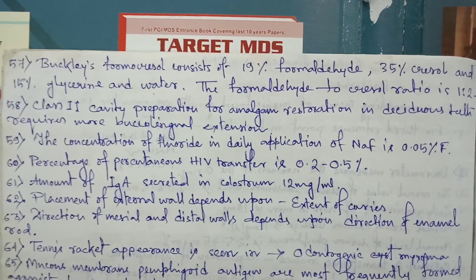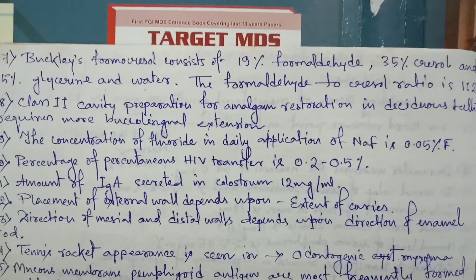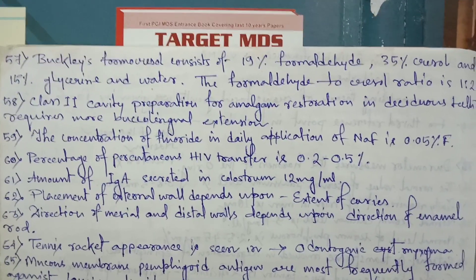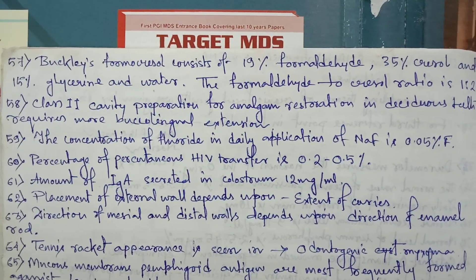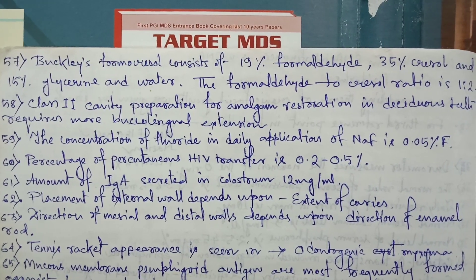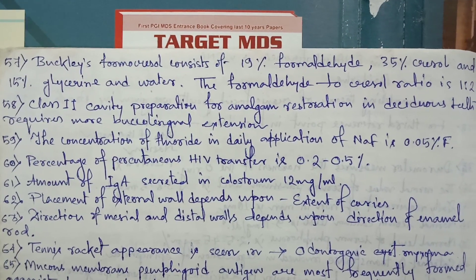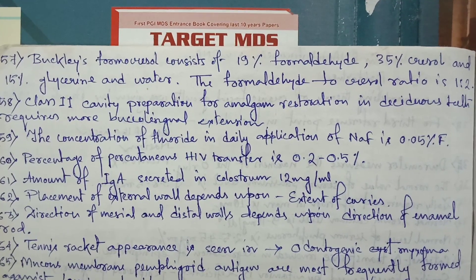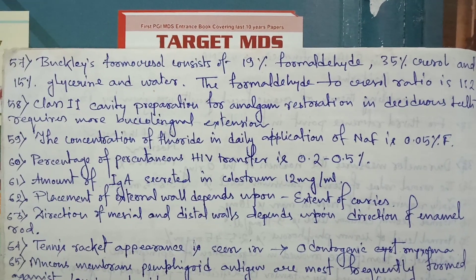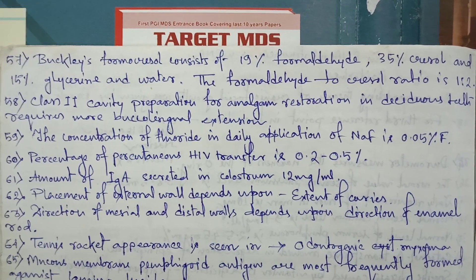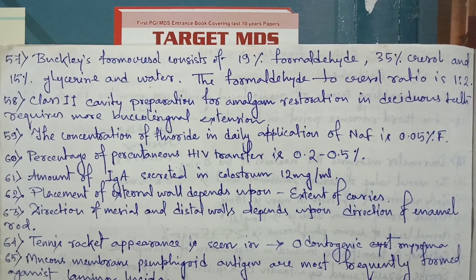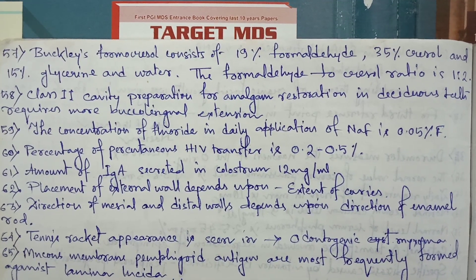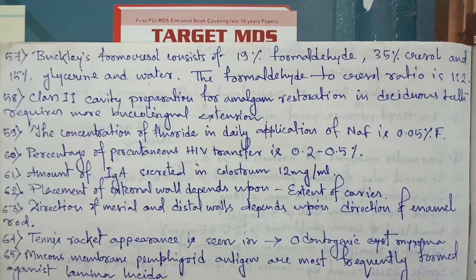Without wasting time, let's read one page. Buckley's formacresol consists of 19% formaldehyde, 35% cresol, and 15% glycerin and water. The formaldehyde to cresol ratio is 1 to 2.